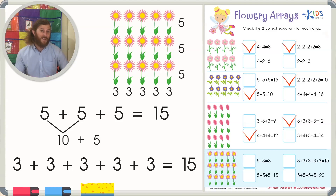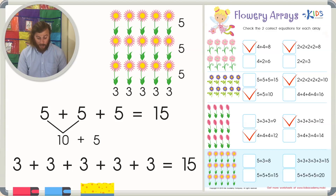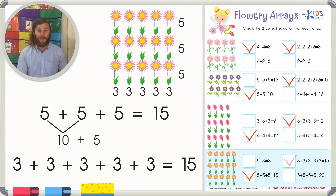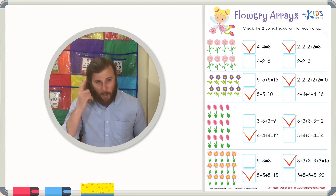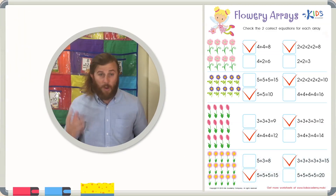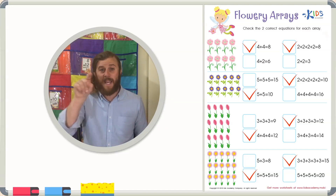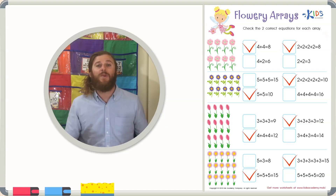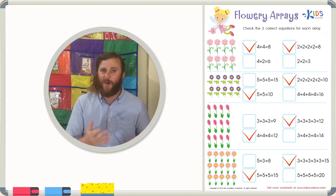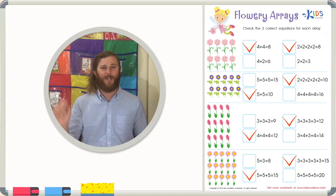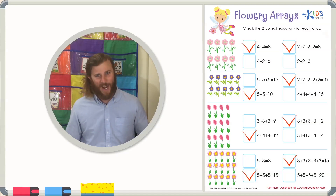Let's go ahead and find these two equations. Here I see five plus five plus five equals fifteen, and three plus three plus three plus three plus three also equals fifteen. Remember, boys and girls, when you're trying to figure out the equations that match an array, count the number in each row and then count the number of rows. You can do the same for the columns to find another equation. Thanks for watching, boys and girls — we'll see you next time!